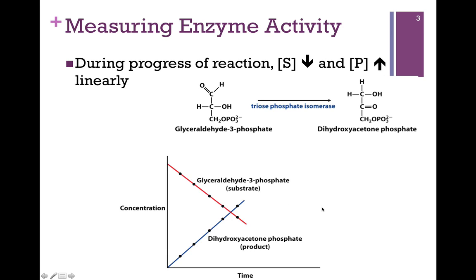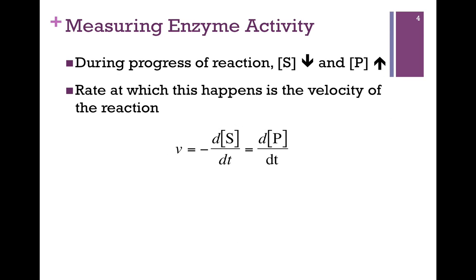Notice that the slopes of these curves are identical. One is decreasing, and the other is increasing, but at the same rate, just as we would expect for one substrate, one product reaction. So if we develop a mathematical expression for that velocity, we see that the velocity of the reaction is equal to the rate of decrease of the concentration of substrate and the rate of the increase in the concentration of the product.